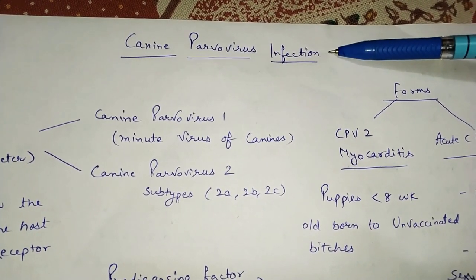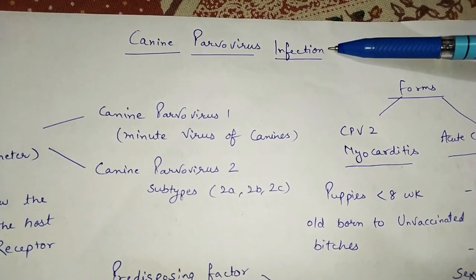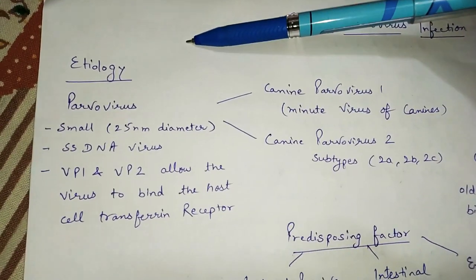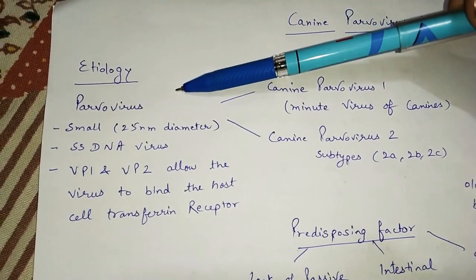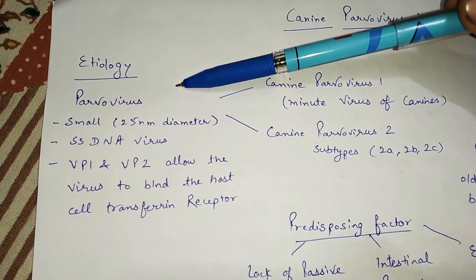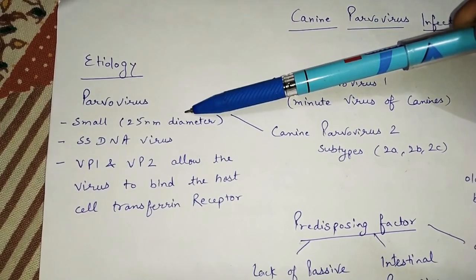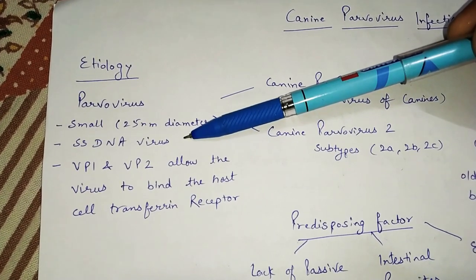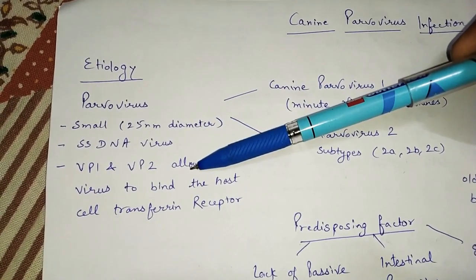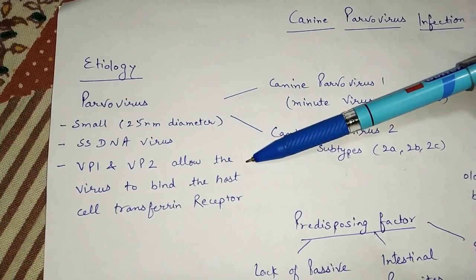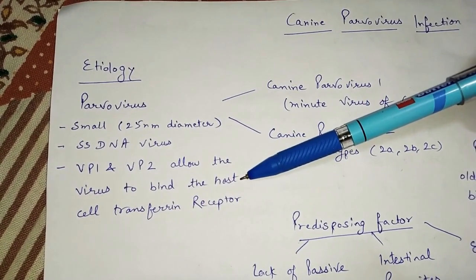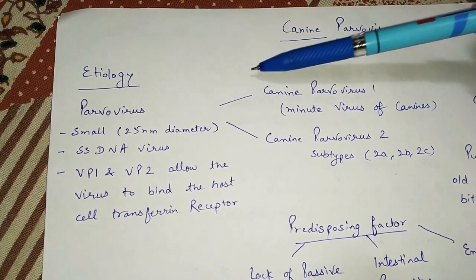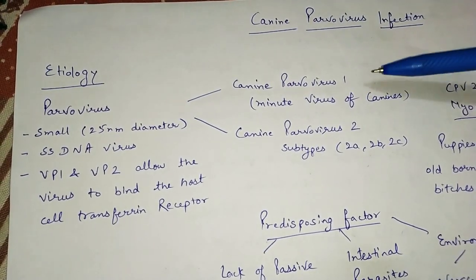We will discuss canine parvovirus infection. Regarding the etiology of this virus, the main causative agent is parvovirus. It is small, 25 nanometers in diameter, a single-stranded DNA virus. The capsid proteins VP1 and VP2 allow the virus to bind the host cell transferrin receptor.